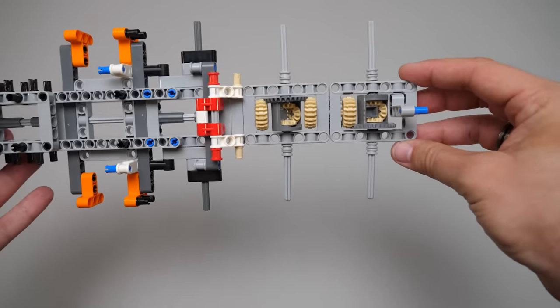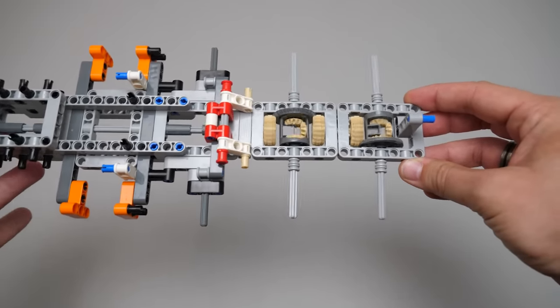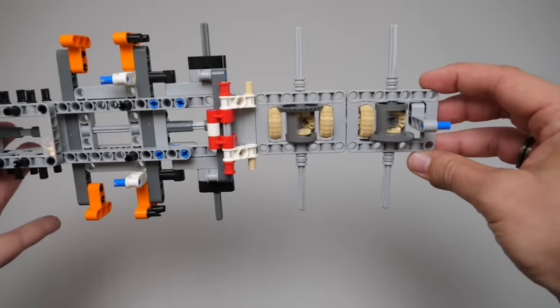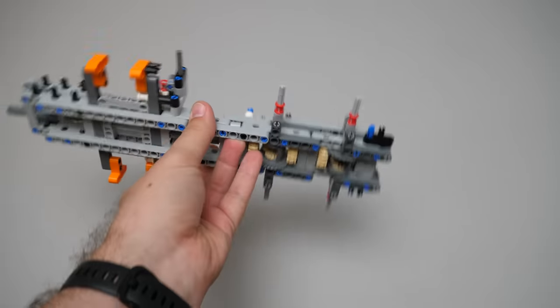Two differentials are added for the rear wheels. Make sure to pay attention to the correct orientation, they should rotate in the same direction when you turn the central shaft. The whole frame and the axles are reinforced with several layers of beams.